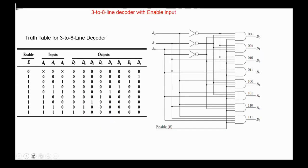Here is the circuit diagram for a 3-to-8 line decoder with enable input. If the enable is 0, then all outputs are 0. However, if the enable is 1, then only one of the outputs will be active (1), depending on the input values. For example, if the input is 011, then D3 will be 1 and all other outputs are 0.